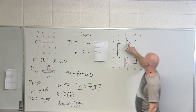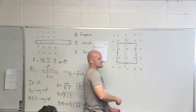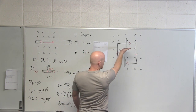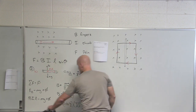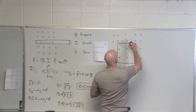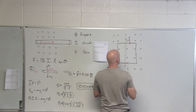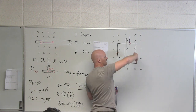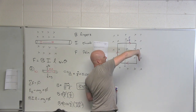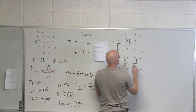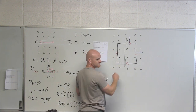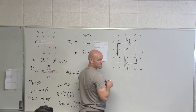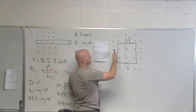Looking at the top segment of the wire: its current is pointing to the right, the magnetic field is directed into the board — so the force is straight up. It feels a force in the upward direction. On the right-hand side of the loop, the force is to the right. The lower portion feels a force downward. And the portion on the left feels a force to the left.